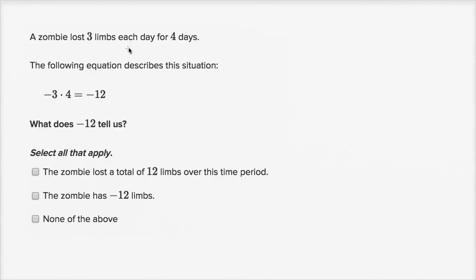A zombie lost three limbs each day for four days. So it's going to lose 12 limbs, three times four. And so it's not a human zombie, it's an alien zombie that has at least 12 limbs to lose. The following equation describes this situation.